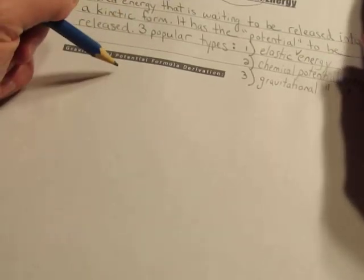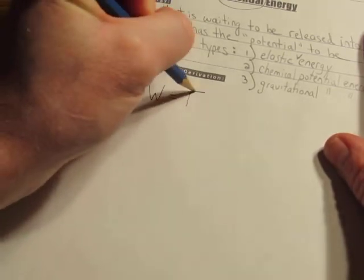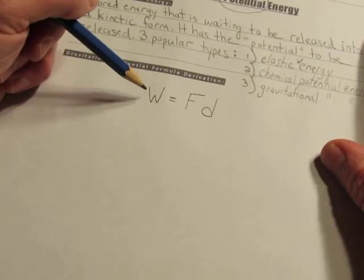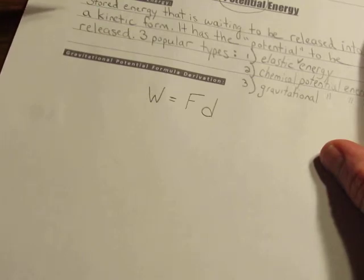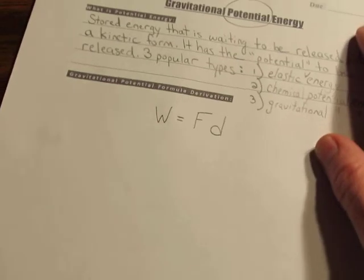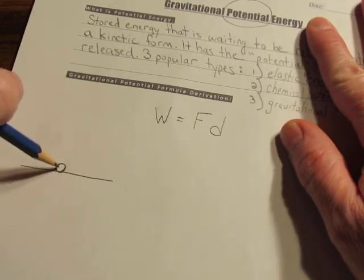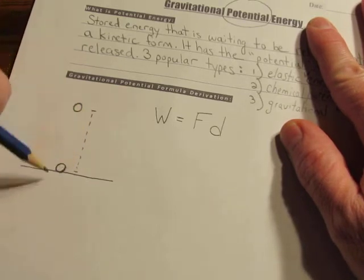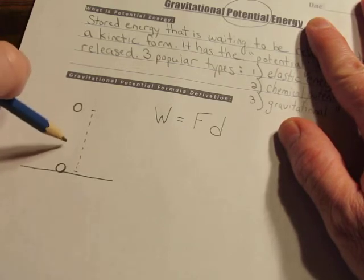It's a really quick formula that we're going to derive for potential energy. Our normal energy formula that we started with two days ago is work equals force times distance (W = Fd), and work is energy. If you did the textbook reading yesterday, they take this formula and turn it into the kinetic energy formula. Today, let's take that formula and turn it into the gravitational potential energy formula.